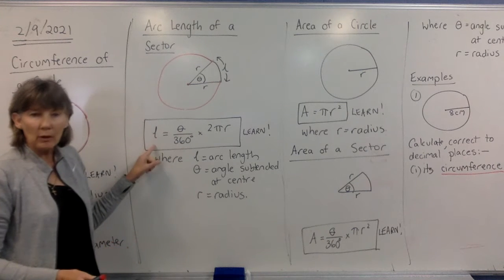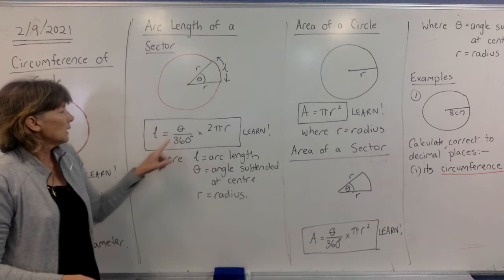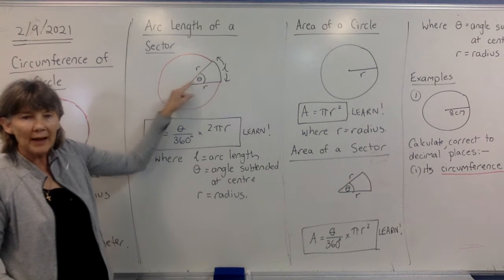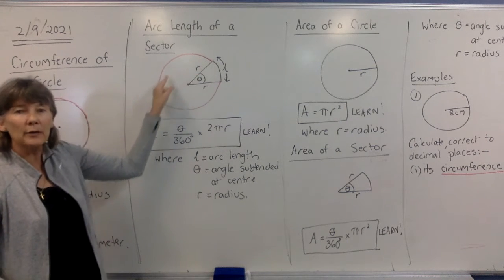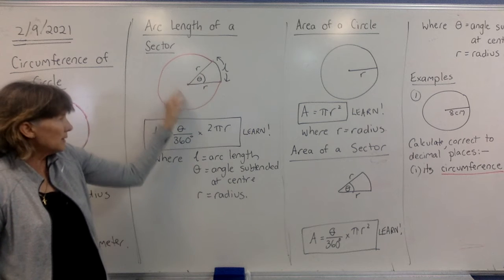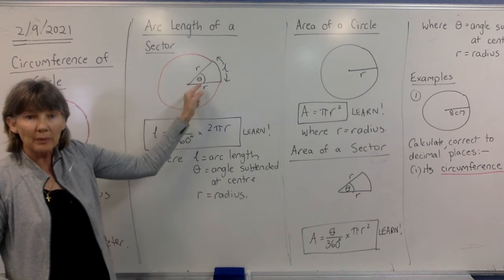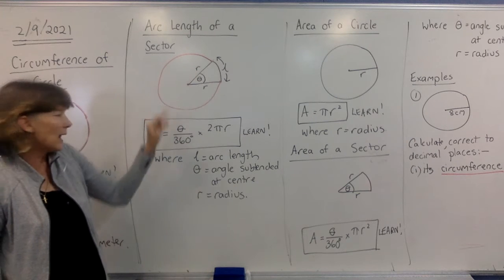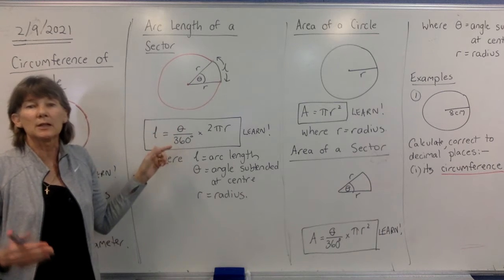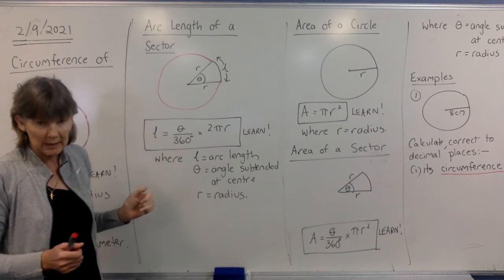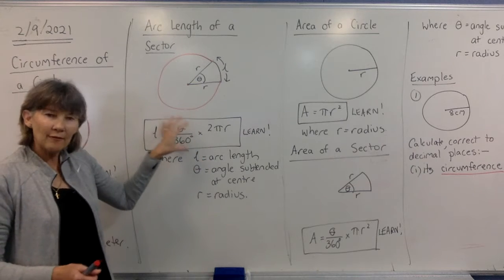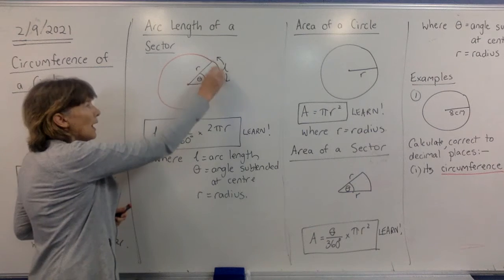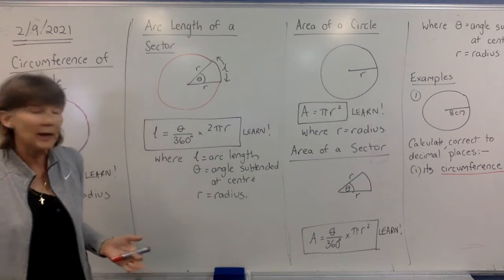The formula is L for arc length equals θ over 360, because you're trying to find what fraction of the circle that angle takes up. We've got 360 degrees in the whole circle at that center point. Whatever that angle is over 360 degrees is the fraction of the circle it's taken up. Times that fraction by the circumference of the circle, and you'll find what part of the whole circumference you have for that arc length.